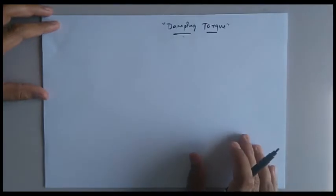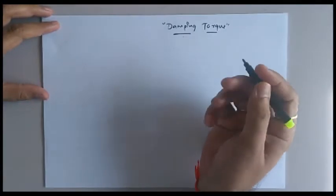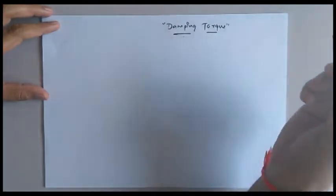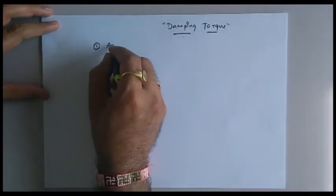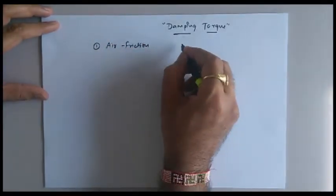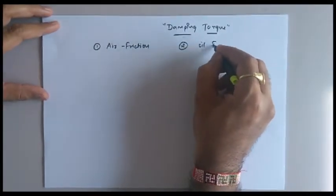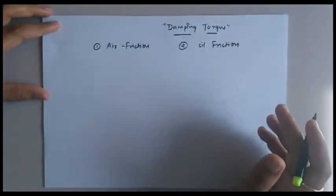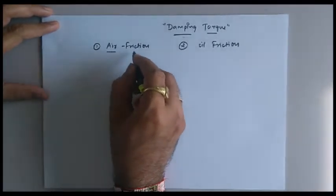As far as the domain of measurement is concerned, we have three different mechanisms with the help of which we can achieve the required damping torque. The first one is with the help of air friction damping, the second one is with the help of oil friction damping, and the third one is with the help of eddy current damping. Now, what is the concept of air friction damping?